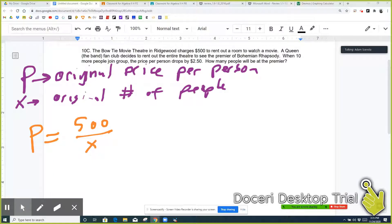All right. But then it says when 10 more people join the group, the price per person drops by $2.50. So the price per person goes down by $2.50 when you add 10 people to the total.